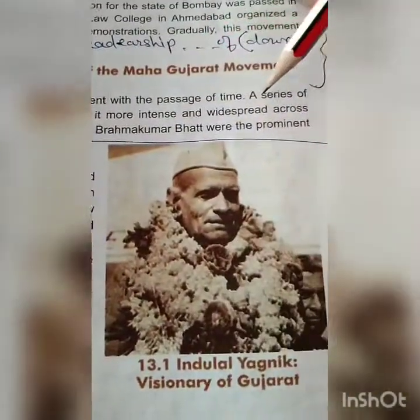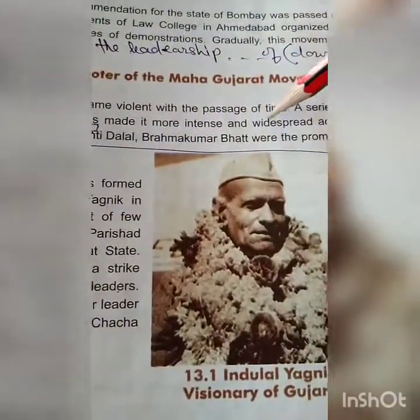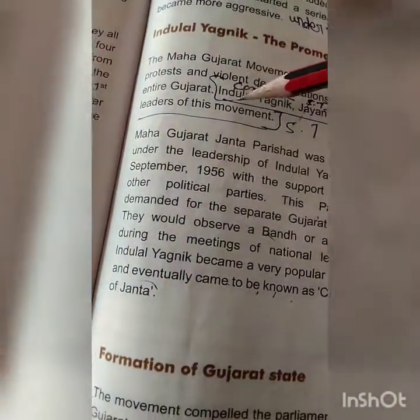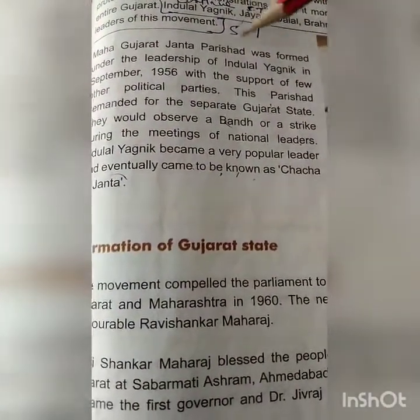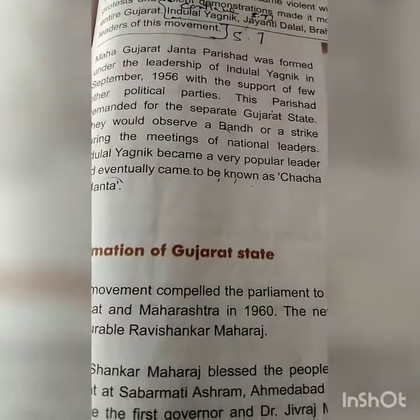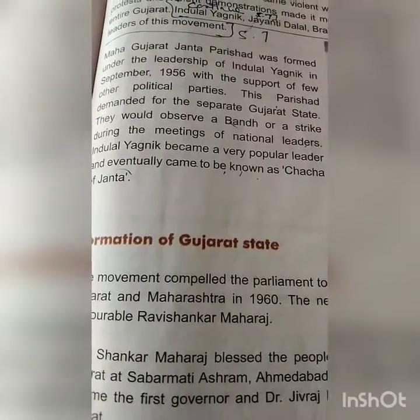The Mahagujarat movement became violent with the passage of time. A series of protests and violent demonstrations made it more intense and widespread across entire Gujarat. Indulal Yagnik, Jainti Dalal, and Brahma Kumar Bhat were the prominent leaders of the movement. Maha Gujarat Janata Parishad was formed under the leadership of Indulal Yagnik in September 1956 with the support of a few other political parties. This Parishad demanded a separate Gujarat state, and they would observe a bandh or strike during meetings of national leaders.